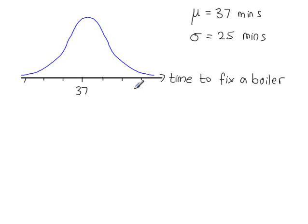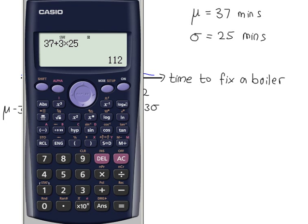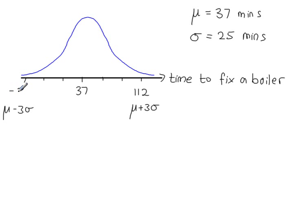So at this point here, that's 112, so that's the mean plus 3 standard deviations. I'm going to do the same on this side, the mean minus 3 standard deviations. So, changing that to a minus, minus 38. So these times along here are the times recorded in minutes to repair a central heating boiler.